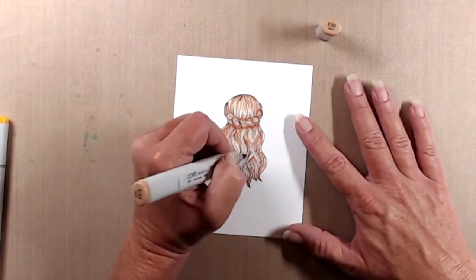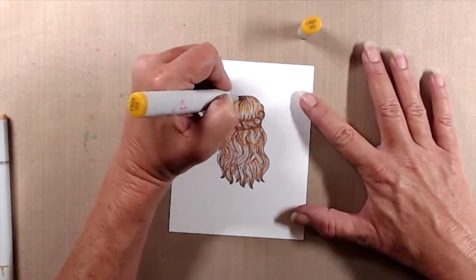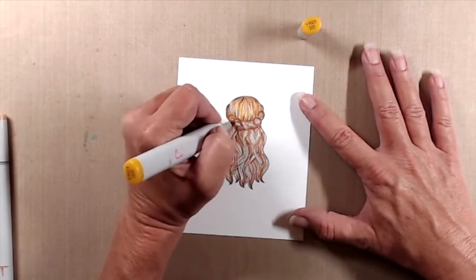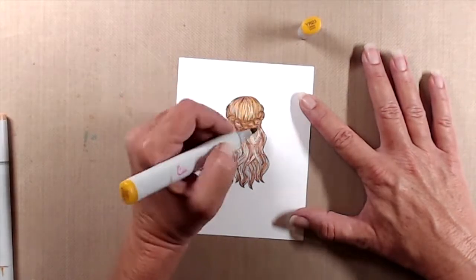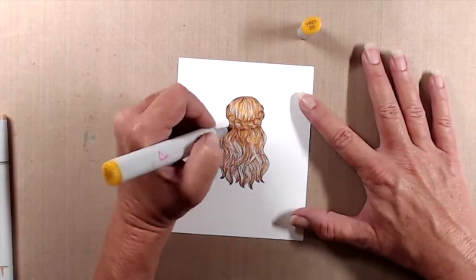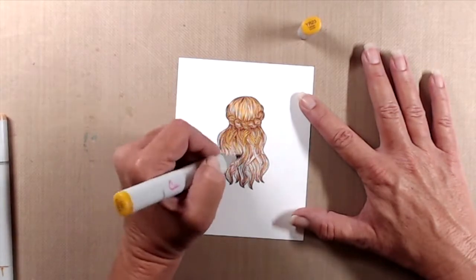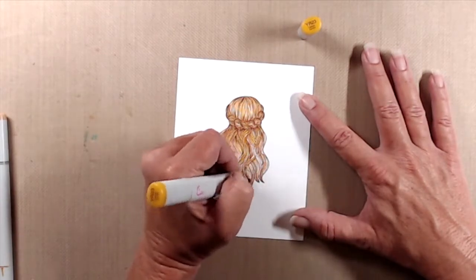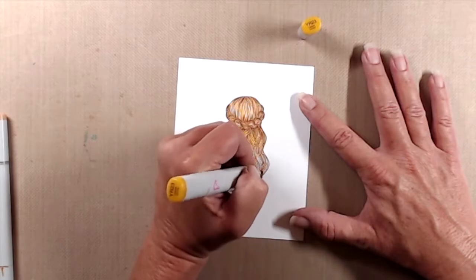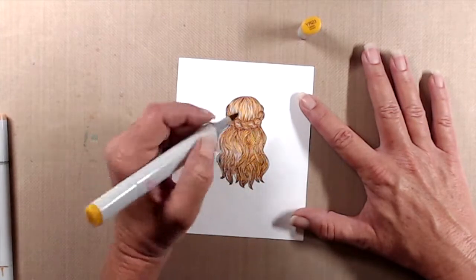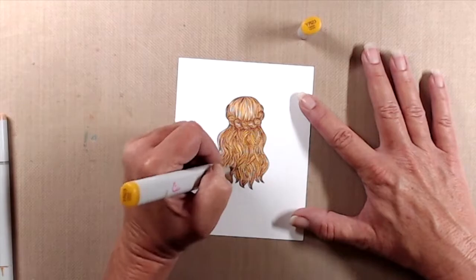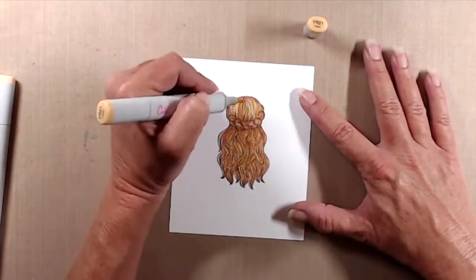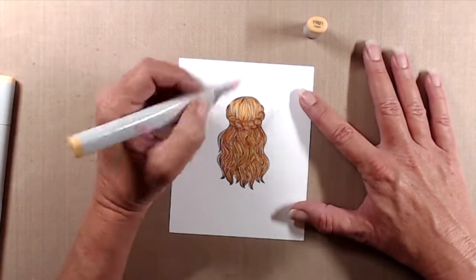Then I came in with YR23 and again, I am not thinking about what I'm doing. I'm literally just doing a flicking motion, but I'm also following the direction of the lines that are drawn in for me. Once I was done with the YR23, I came in with YR21 and started to blend some of those out.